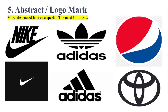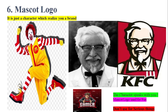The fifth type of logo is the abstract logo or logomark, which is more abstract. This type of logo is special and most unique. Look here at Nike — they chose a tick mark as their abstract logo, and now they have removed the Nike name and just use the tick mark. Adidas, Pepsi, Toyota, and others — these types of logos are called abstract logos.